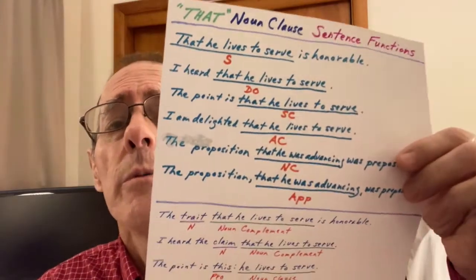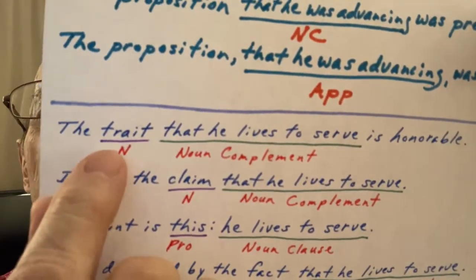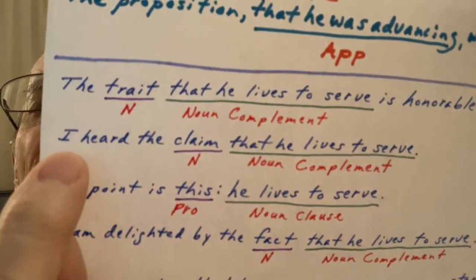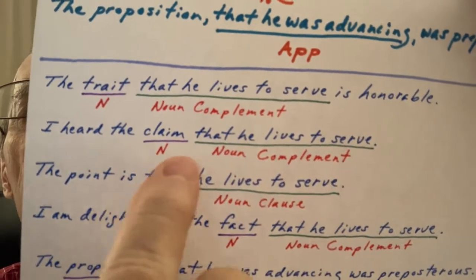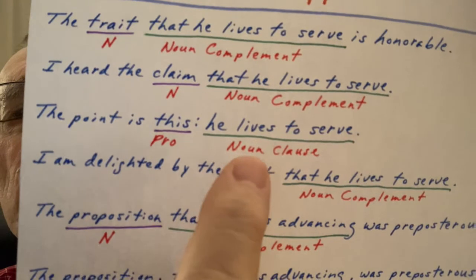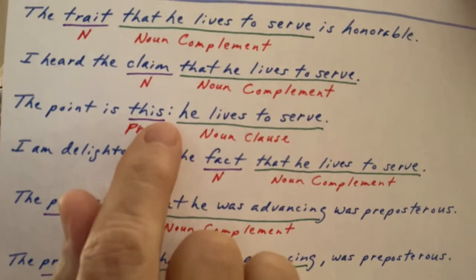And the reference will be anaphoric — that is, it will refer backwards. We look at our critical notepaper and we see 'the trait that he lives to serve' — you see your noun and your noun complement. 'I heard the claim that he lives to serve' — you see your noun and noun complement. And here you see your pronoun with your noun clause, because you have punctuation here — you don't yet have the word 'that,' but when you think this through in the brain, it'll come out with the word 'that' in it.